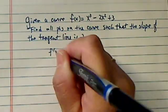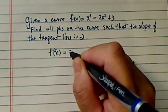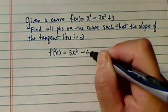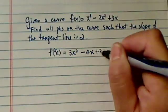So basically they're asking to find the derivative of f(x). This is relatively easy. It's 3x squared minus 4x plus 3.